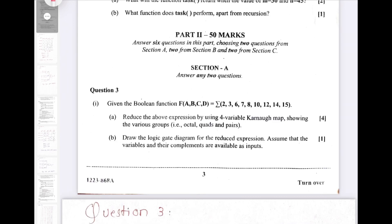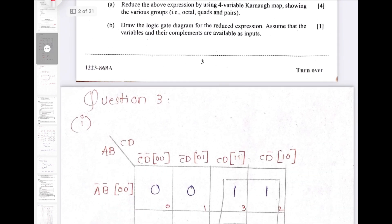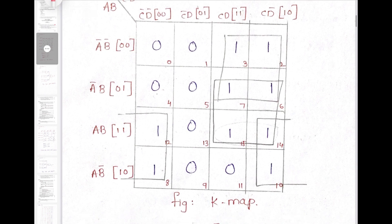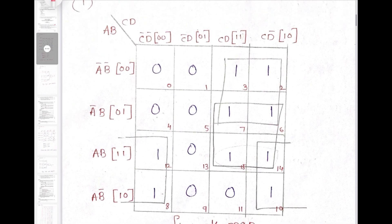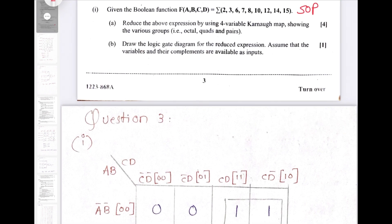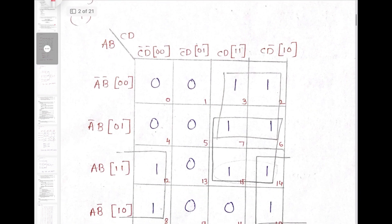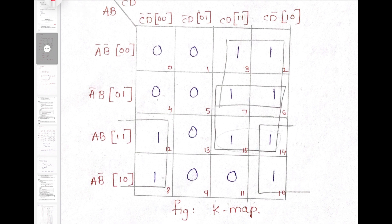Hello everyone, let us solve question number 3 from part 2 of ISC Computer Science paper 2023. Question number 3 gives an SOP expression and we have to draw the K-map for the same. This will be the K-map for the given expression. The expression contains minterms 2, 3, 6, 7, 8, 10, 12, 14, 15, so we have to put the value 1 wherever it is given in the question.